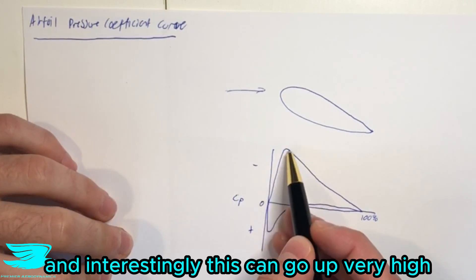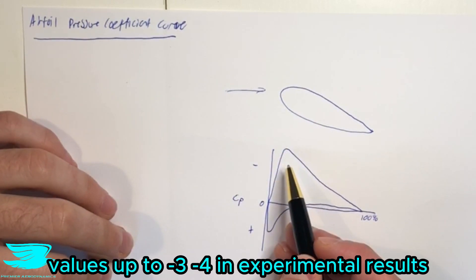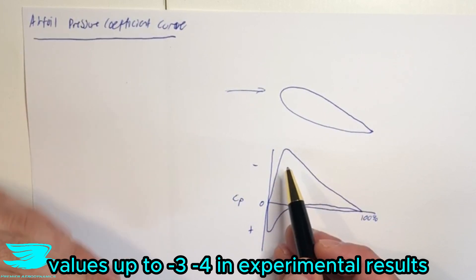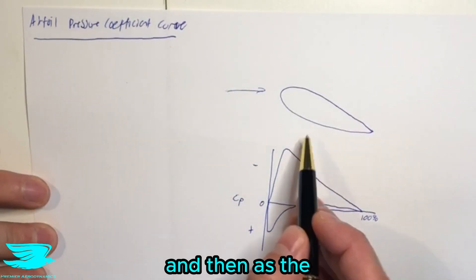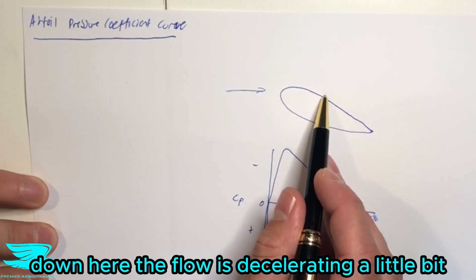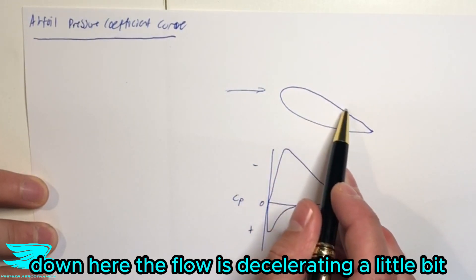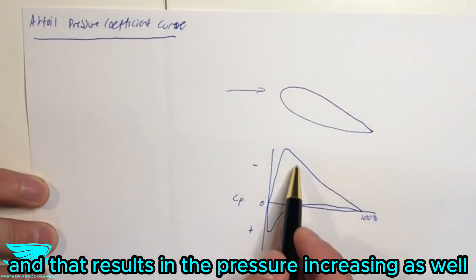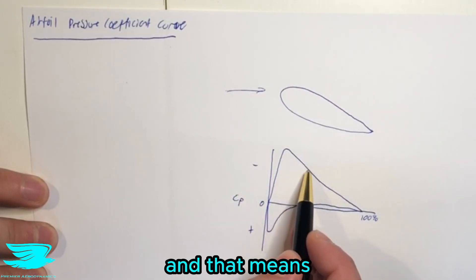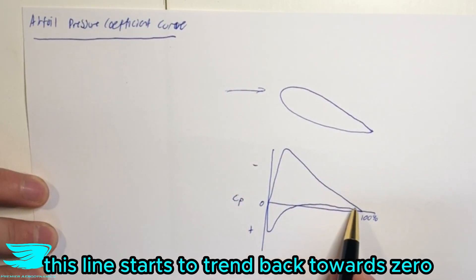And interestingly, this can go up very high. Like you can see values up to minus three, minus four in experimental results quite readily. And then as the flow goes over the airfoil down here, the flow starts to decelerate a little bit. And that results in the pressure increasing as well, the pressure coefficient as well. And that means this line starts to trend back towards zero.